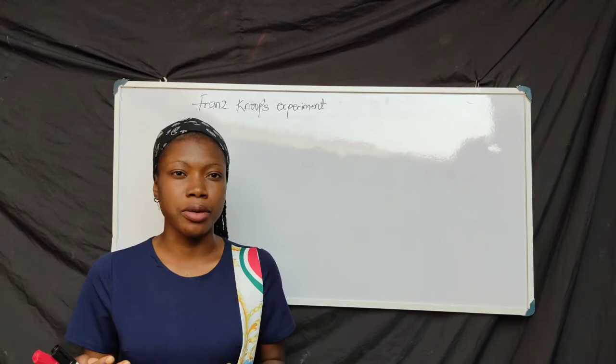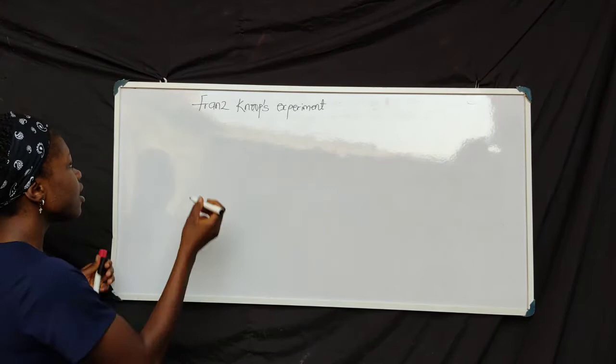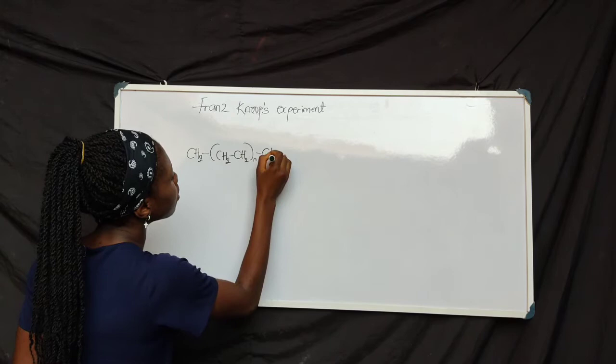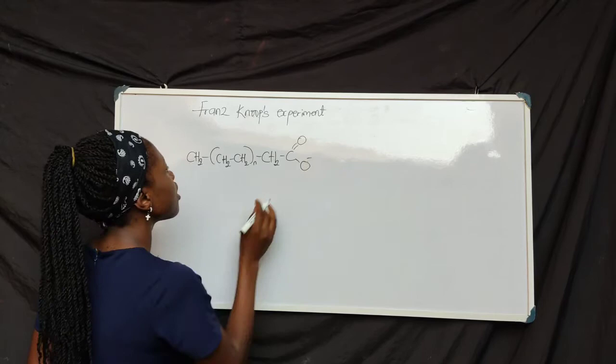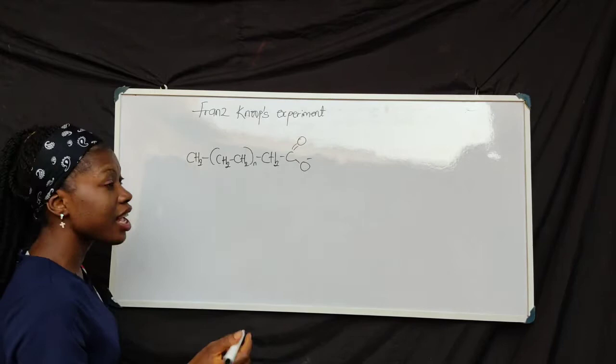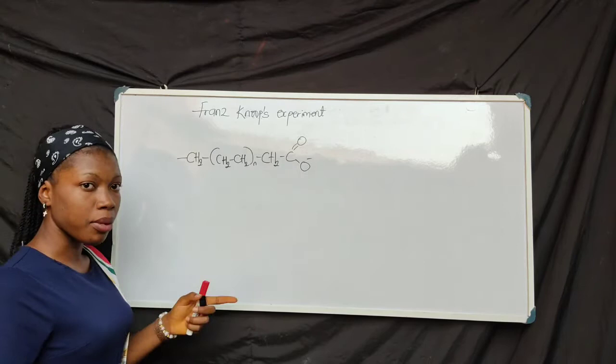When he labeled the fatty acids, he actually labeled three-chain fatty acids. And you remember the structure of fatty acids. Let's say this is a typical fatty acid and it is odd-numbered — let's assume N is one. He labeled them with a phenyl group at the omega-carbon, that is, he attached a phenyl group to the omega-carbon.